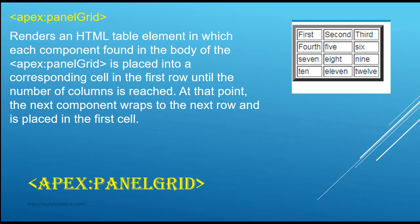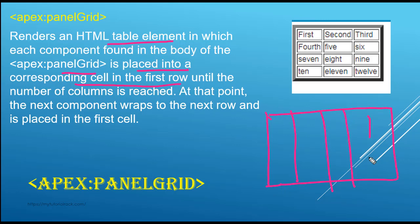It renders an HTML table element in which each component found in the body of this panel grid is placed into a corresponding cell in the first row until the number of columns is reached. So if you specify five as the number of columns, up to five elements will go in the first row, and the sixth element will automatically go to the first cell of the next row. So the first, second, third, fourth, and fifth elements fill the row when the column number is set to five.